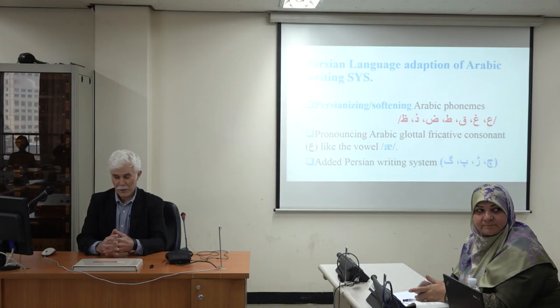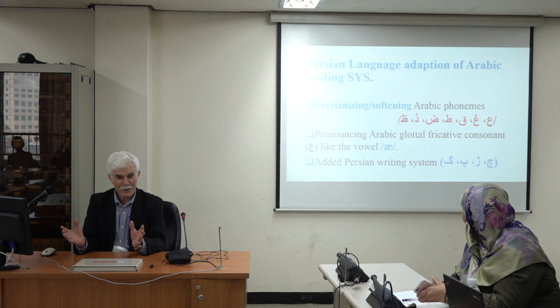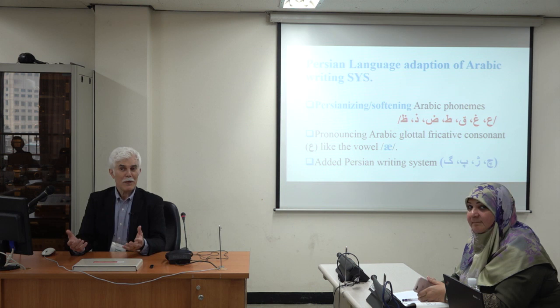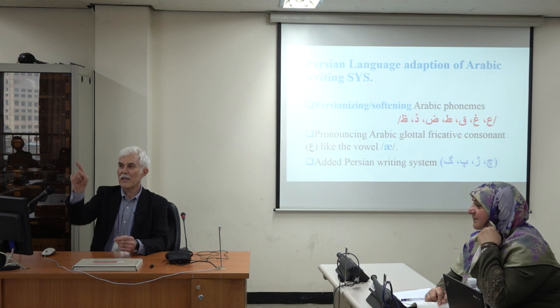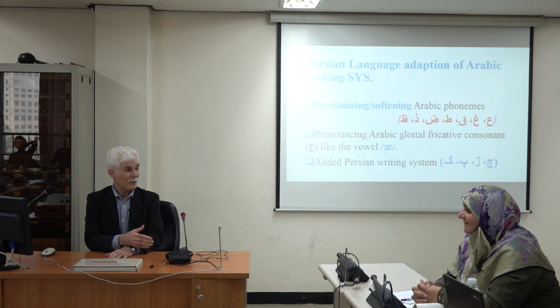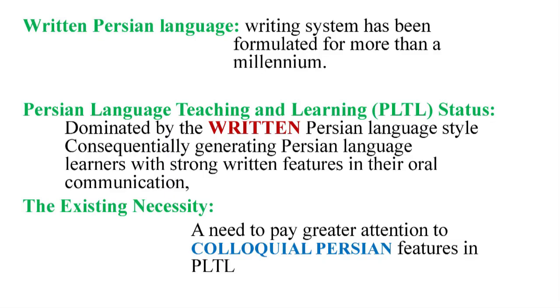The writing system that Persian language adopted was an Arabic writing system, as my Arab colleagues present here would know. These letters are borrowed from Arabic but are no longer pronounced with Arabic features in Persian — they have become quite soft. For example, the ayin is no longer ayin in Persian; it is just the first vowel 'a'. We make no distinction between Ali written with aleph and Ali written with ayin. We don't pronounce Ali the way Arabs pronounce it. Why should Persian language learners be forced to do so?